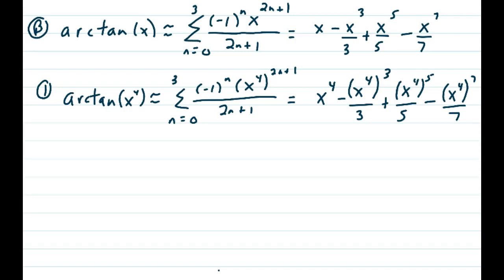Now, if we wanted to create the arctan of x to the 4th and write it as a power series, we'd simply erase the x and put in an x to the 4th. So we get the summation n equals 0 of negative 1 to the nth, and now we have x to the 4th being raised to 2n plus 1 over 2n plus 1.